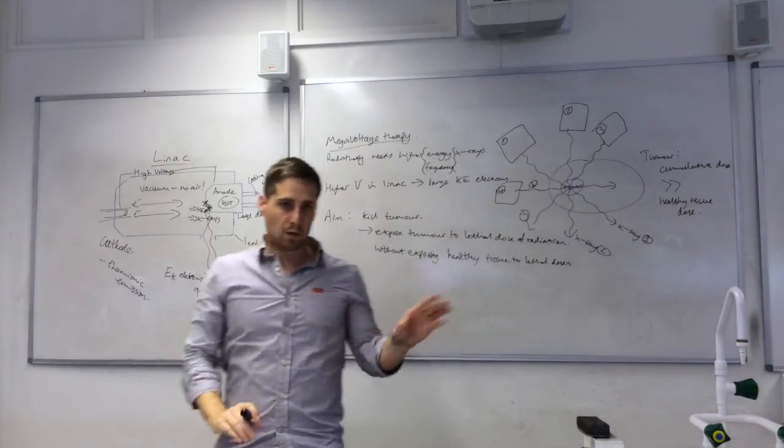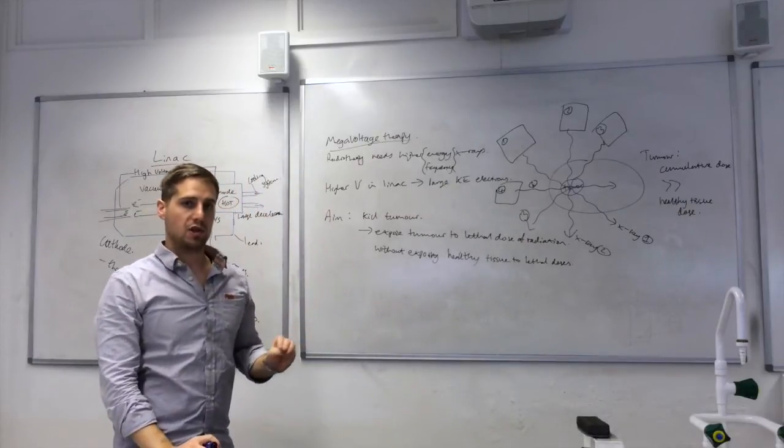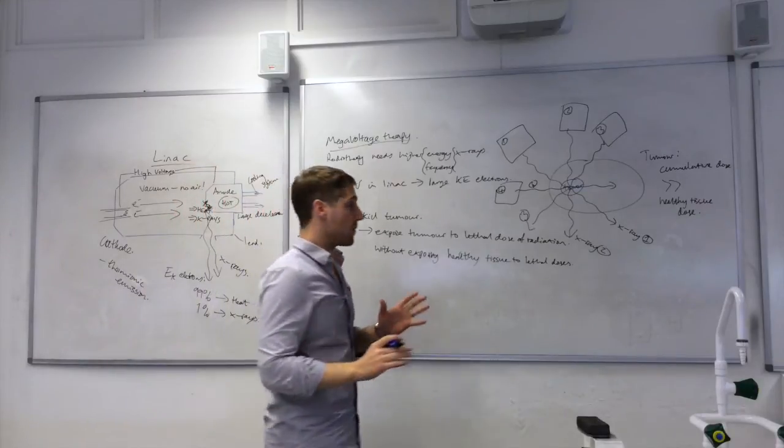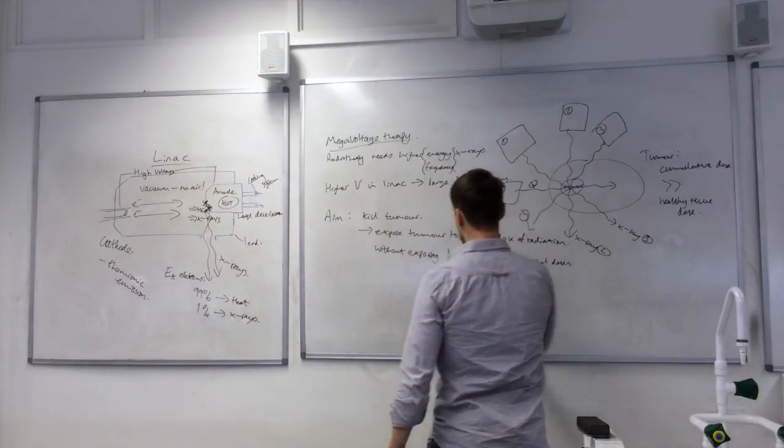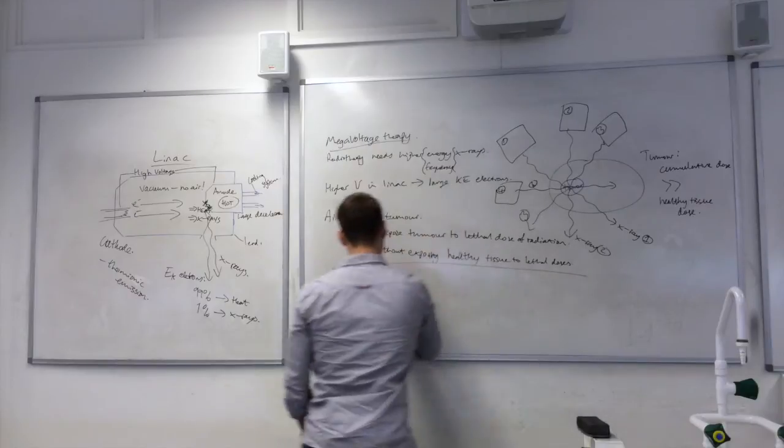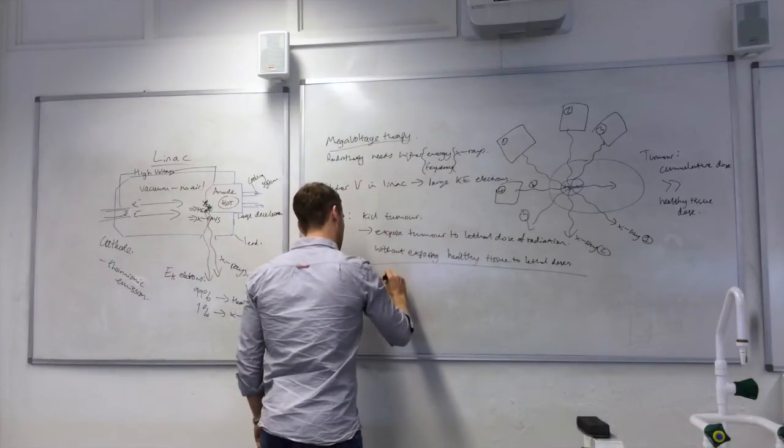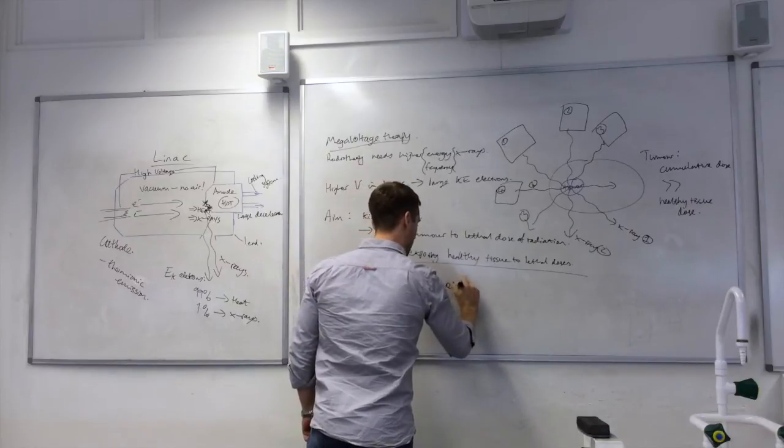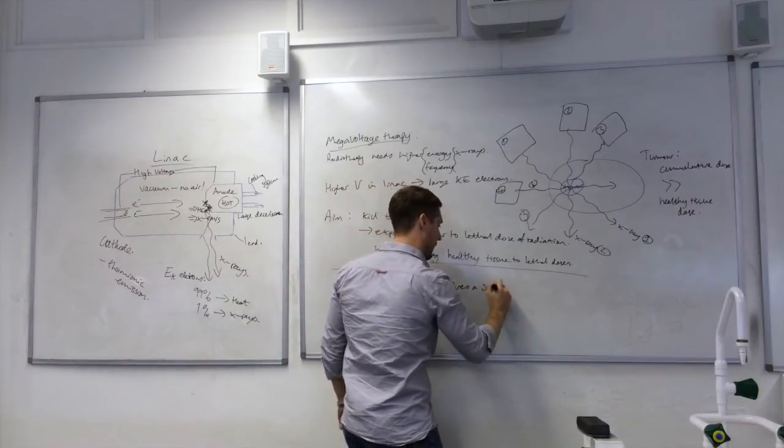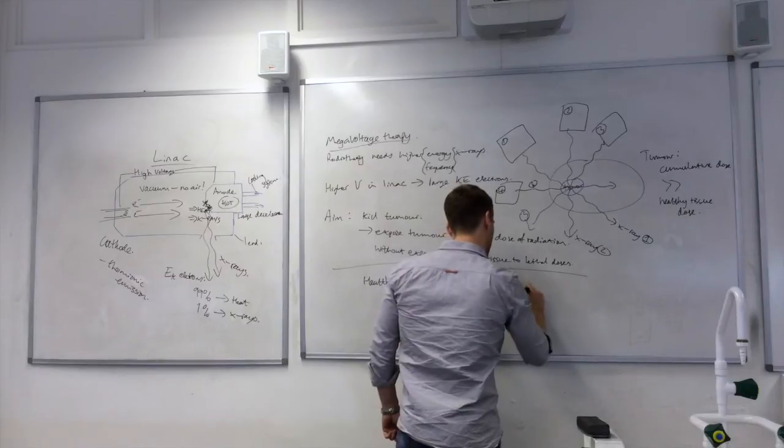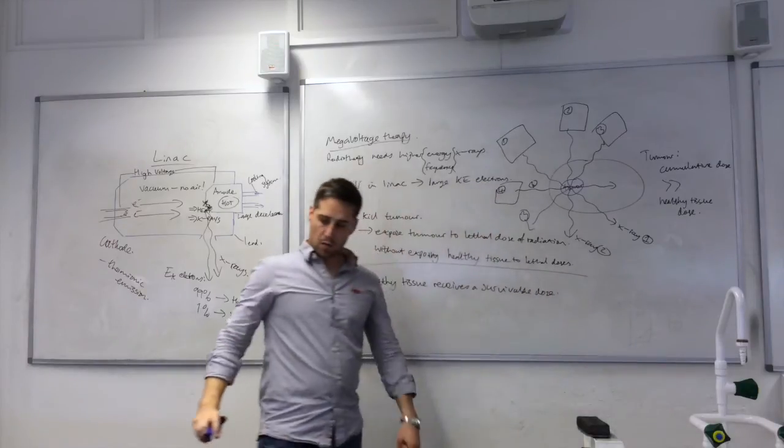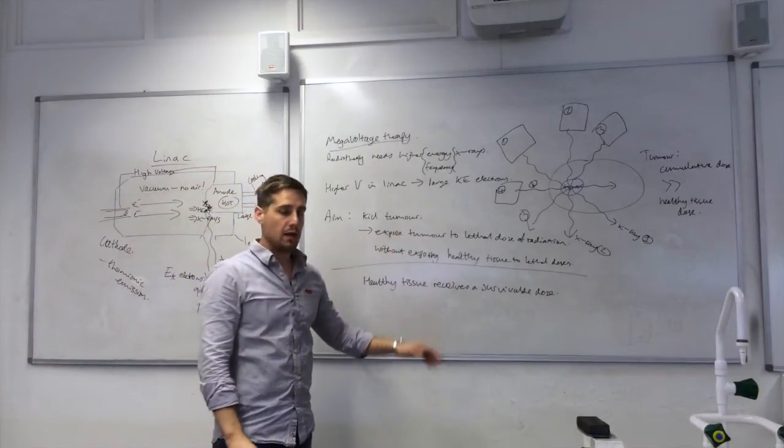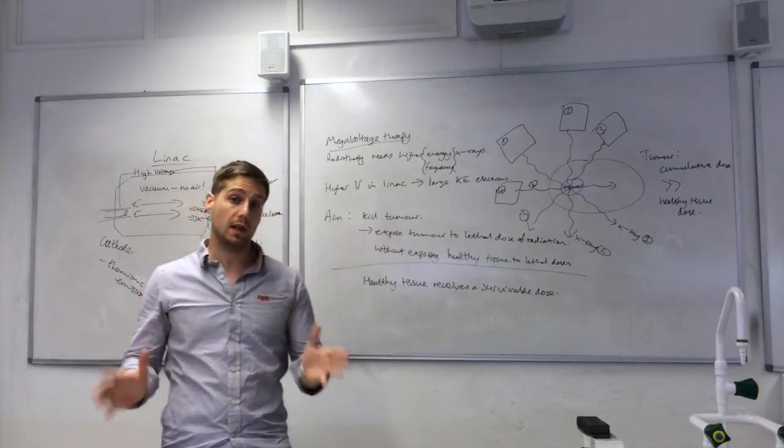And that is much larger than what the healthy tissue receives. So, by doing this, we ensure that the healthy tissue only receives a dose that it can recover from, that it can survive. So our tumour receives the lethal dose and the healthy tissue receives a dose that it can survive from.